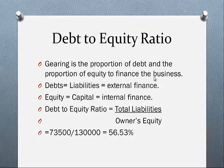The debt-to-equity ratio is the proportion of debt and equity used to finance the business. The business employs assets — remember from looking at a balance sheet — and those assets are financed by debt called liabilities (external finance) and equity, the amount of capital that comes from the owners (internal finance). The formula is total liabilities divided by owner's equity. For example, if total liabilities are 73,500 and total owner's equity is 130,000, we have a ratio of 56.53%.